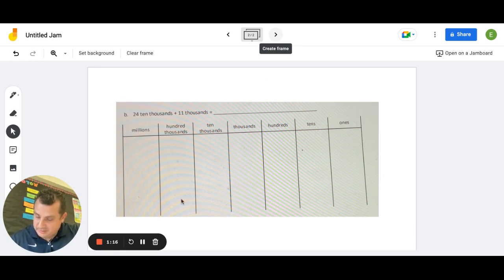I think it's here. So here is standard form. We're going to try to find it and put it right in here. So 24 10,000s plus 11,000s. Here's our place value chart. We have our ones, tens, hundreds, thousands, 10,000s, 100,000s, and millions.